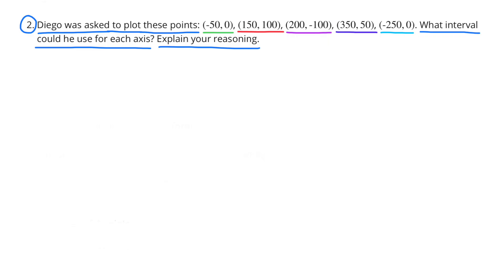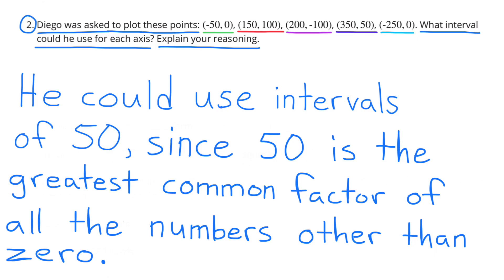Number two: Diego was asked to plot these points — what interval could he use for each axis? Explain your reasoning. When making each axis for his graph, he could use intervals of 50, since 50 is the greatest common factor of all the numbers other than zero.